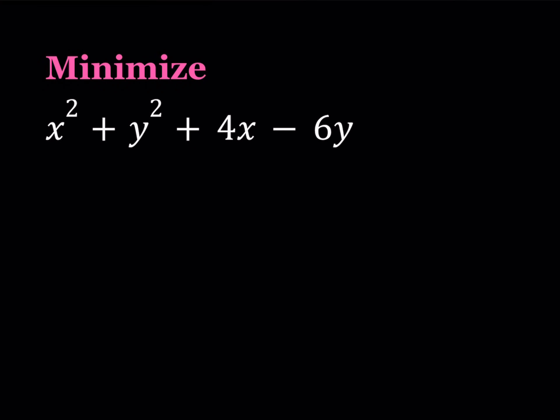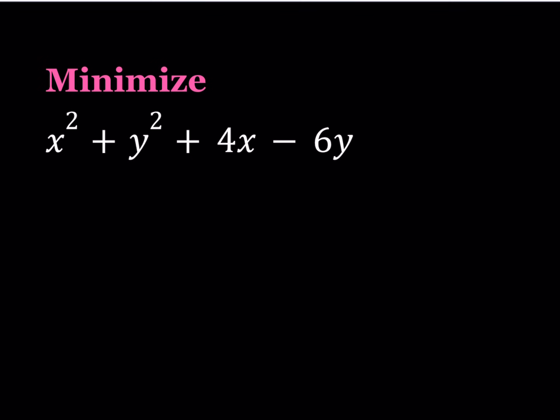Hello everyone. In this video we're going to be minimizing an expression in two variables. We have x squared plus y squared plus 4x minus 6y. And we're going to find the minimum value of this when x and y are real numbers.